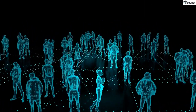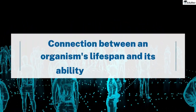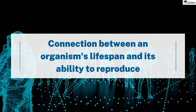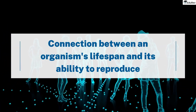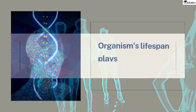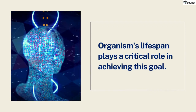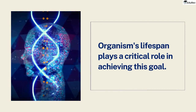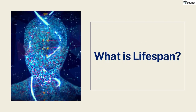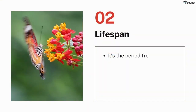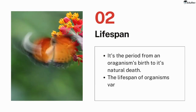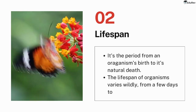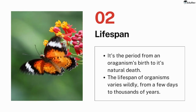Let's talk about something really interesting — the connection between an organism's lifespan and its ability to reproduce. Reproduction is essential for maintaining the continuity of species, but did you know that an organism's lifespan plays a critical role in achieving this goal? Lifespan is the period from an organism's birth to its natural death, and it varies widely from just a few days to thousands of years.